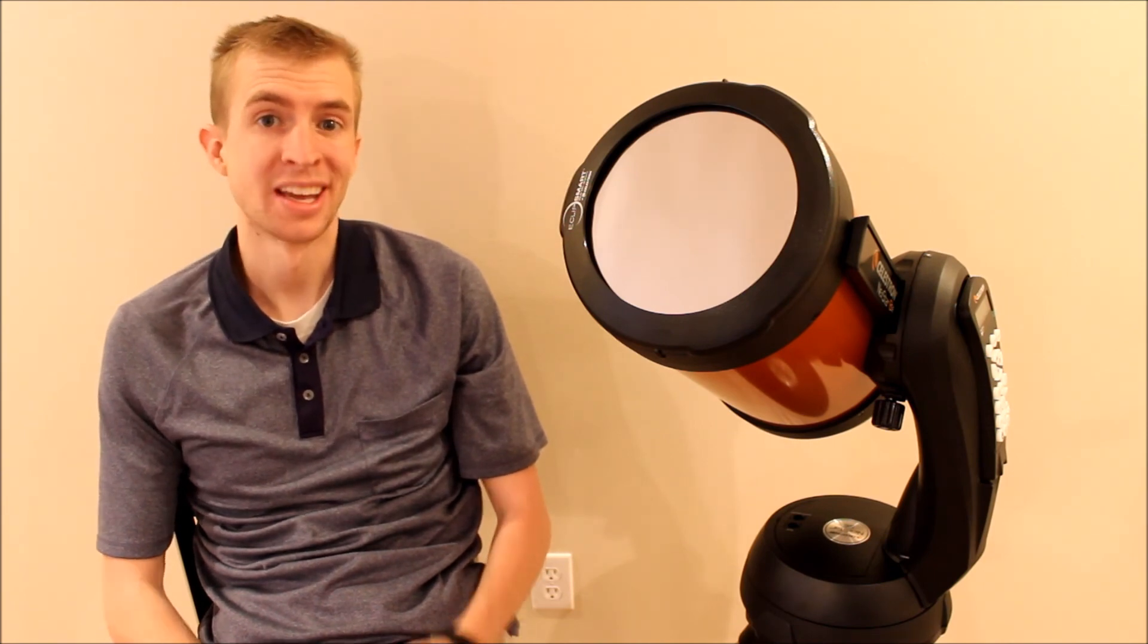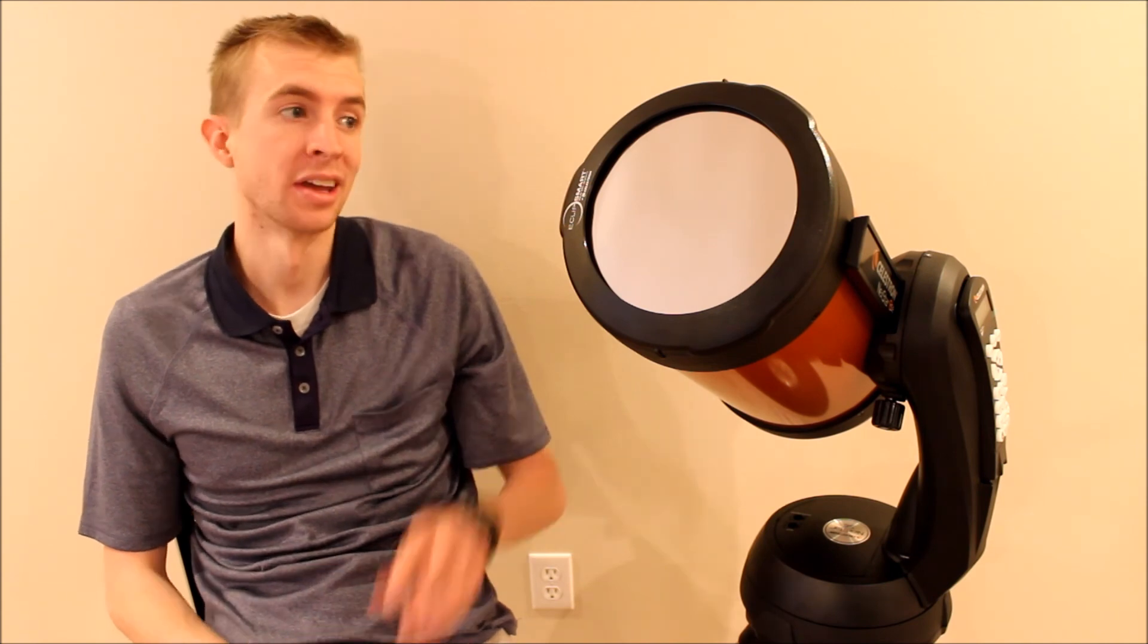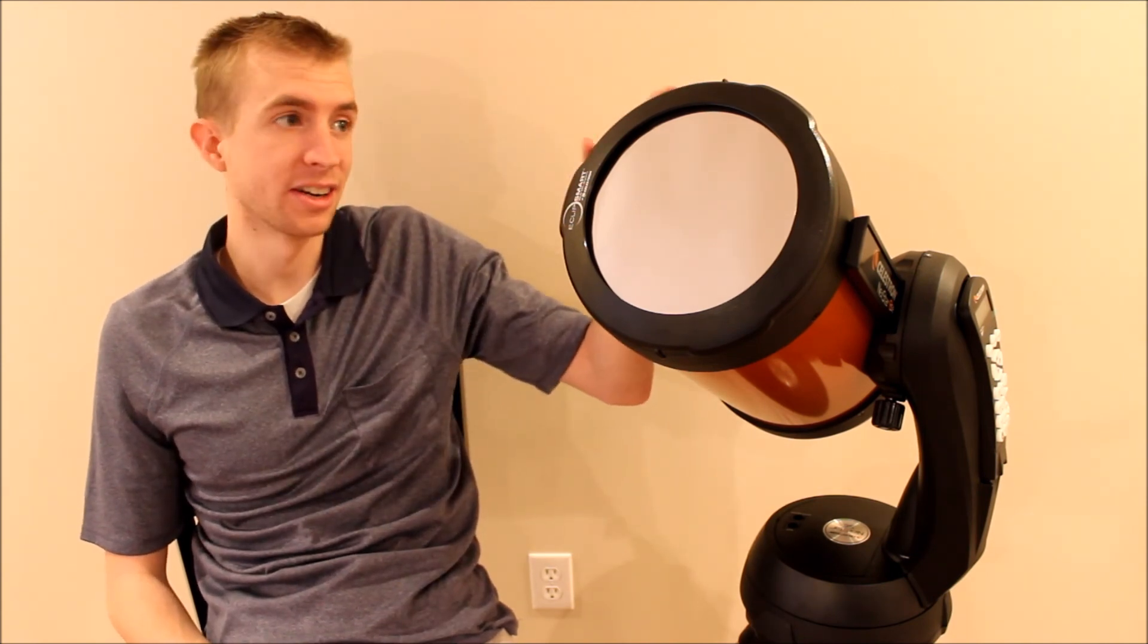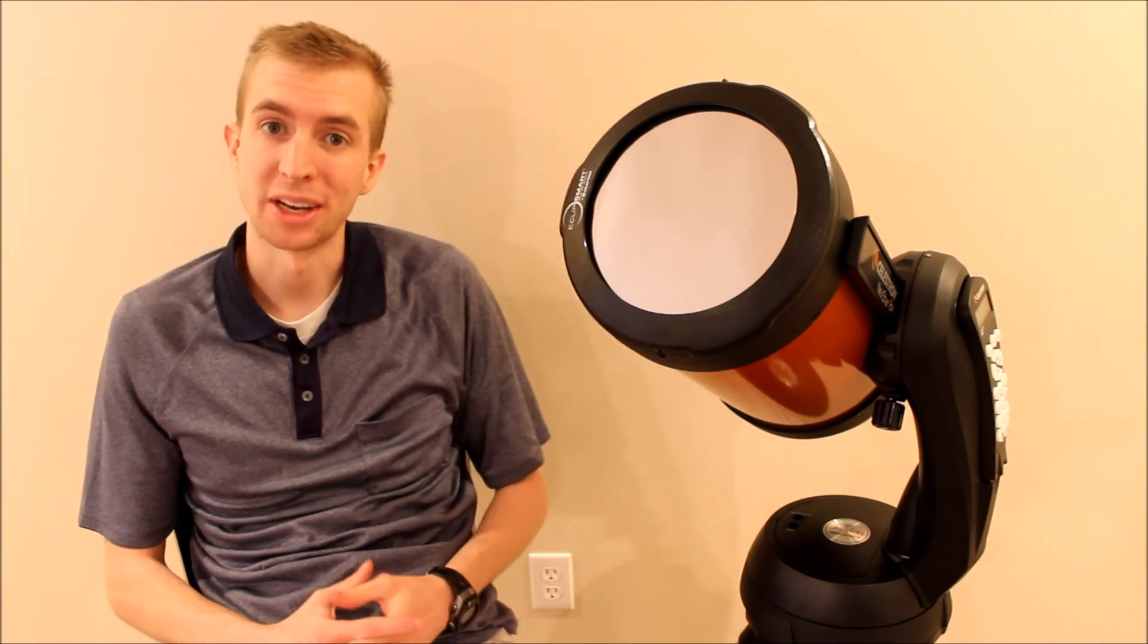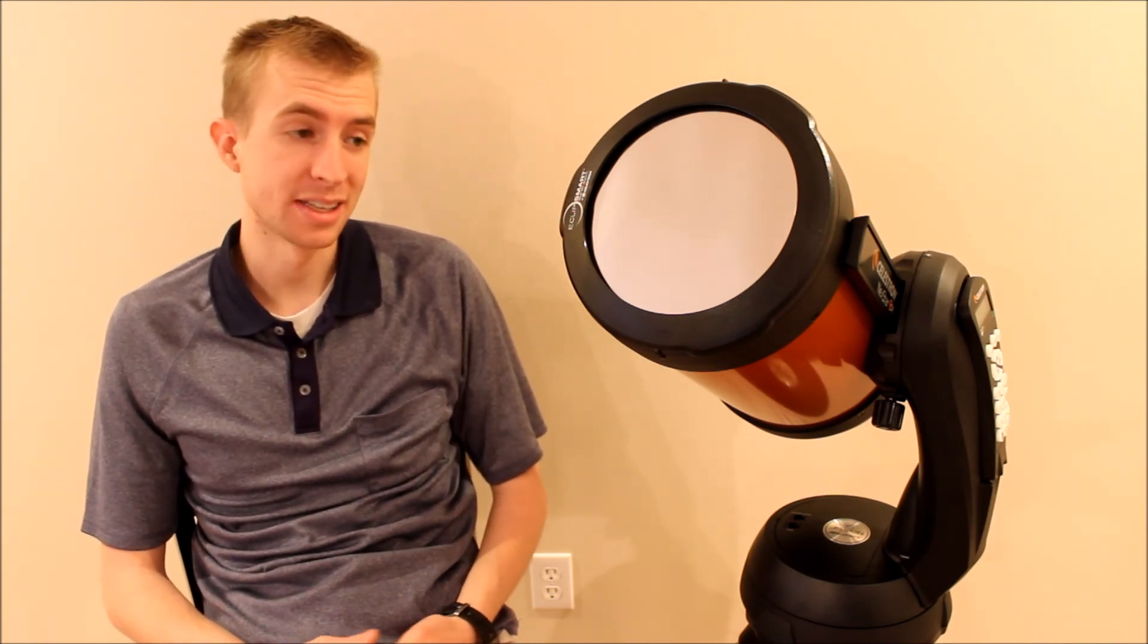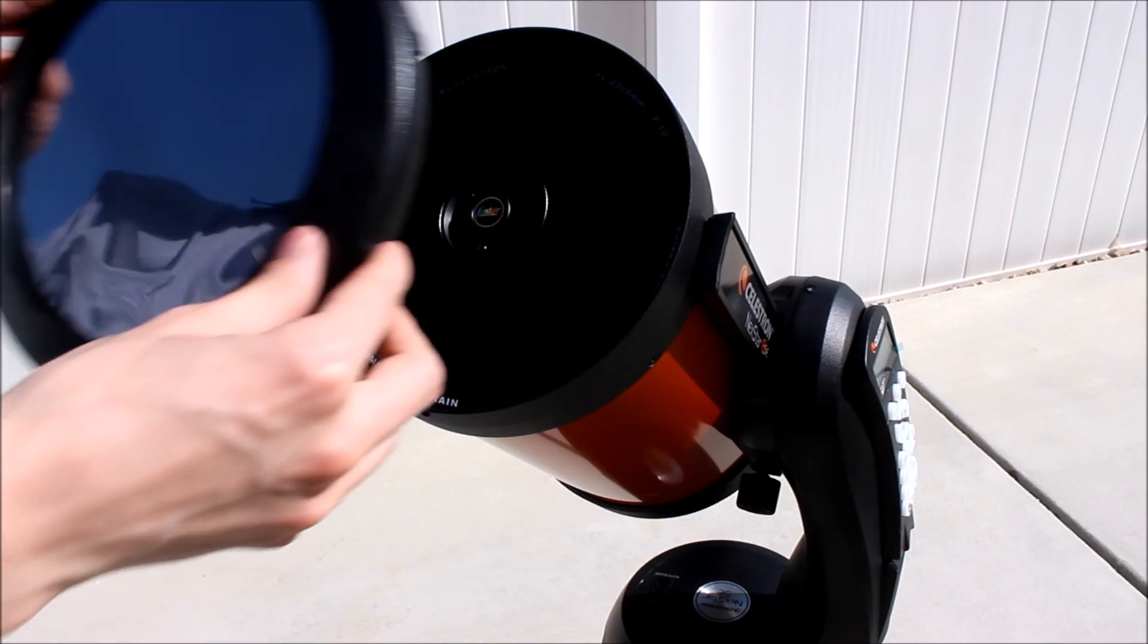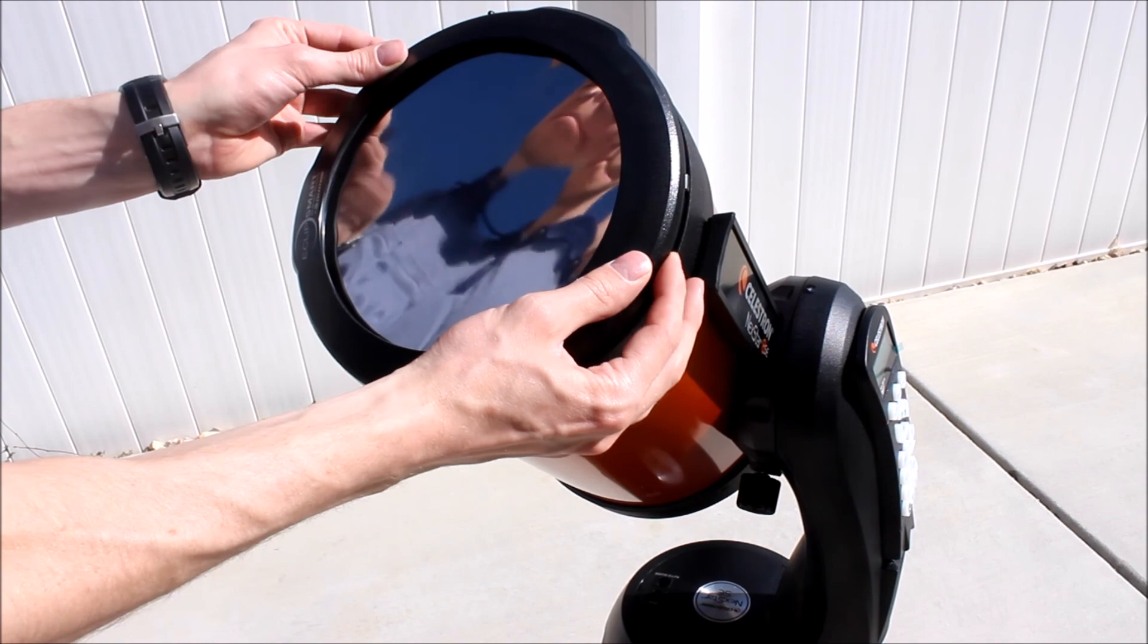All right, guys, well, that's my review of the Celestron EclipseSmart solar filter for Schmidt-Cassegrain telescopes. It is just a solar filter, but it is a really good one. It looks really great on here, that seamless fit. 99.999% of incoming sunlight is blocked. It's pretty affordable, which is a huge plus. And that secure connection is the major selling point for me. It's super secure. You can feel pretty safe when you're using it.